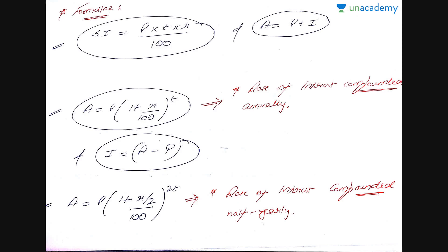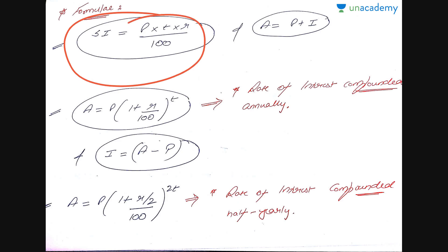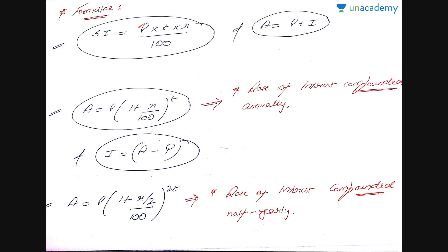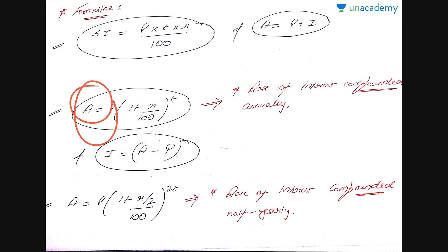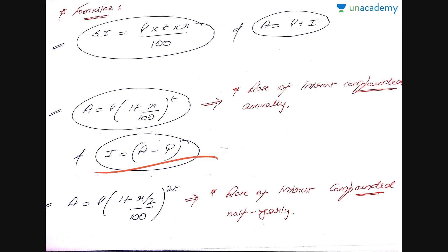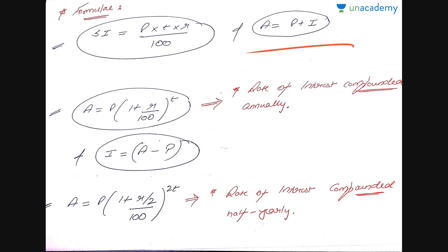Now for the formulae. Simple interest is calculated as: SI = (Principal × Time × Rate) / 100, and Amount = Principal + Simple Interest. For example, 100 rupees borrowed at 10% for one year gives SI = (100 × 1 × 10) / 100 = 10 rupees, and Amount = 110 rupees. The compound interest formula is: A = P × (1 + R/100)^T, where R is compounded annually. To find the compound interest charged, use CI = A − P, since Amount always equals Principal plus Interest.